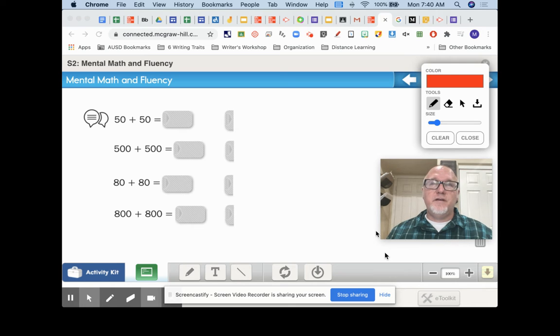So with this next set, we have very similar problems. However, we're starting with two digits. So 50—that's one digit.